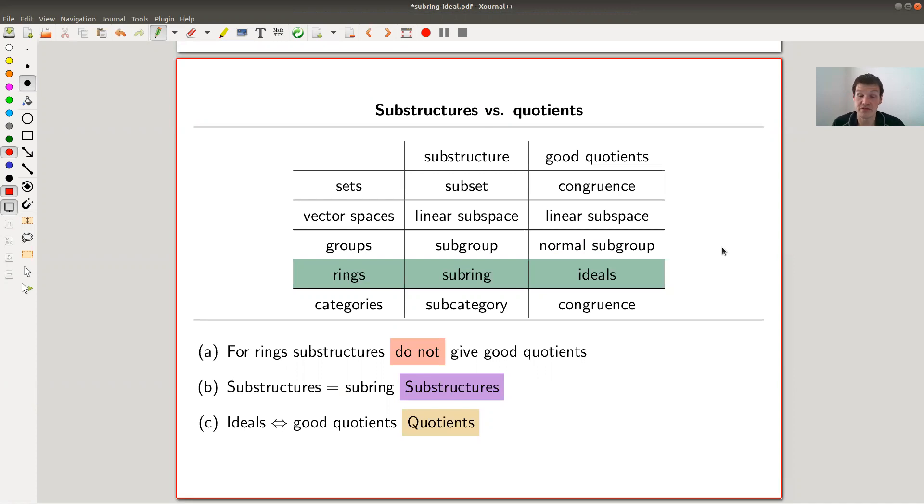So whenever you study a certain type of structure, might it be a vector space or a group or whatever, or in this case a ring, it kind of makes sense to look at substructures. And what are substructures? Well, you take a subset and on that subset you still have the induced operations. Like for rings, you would have addition and